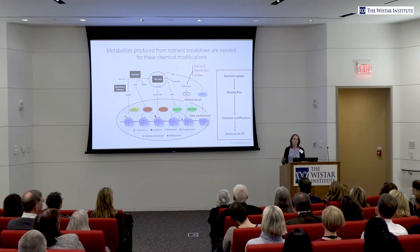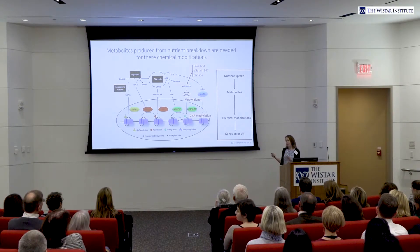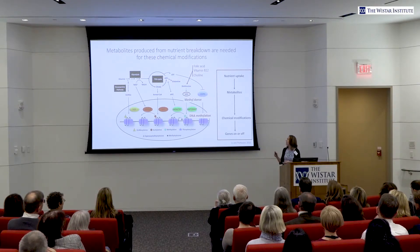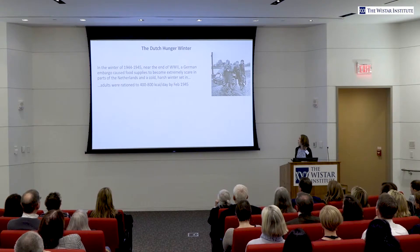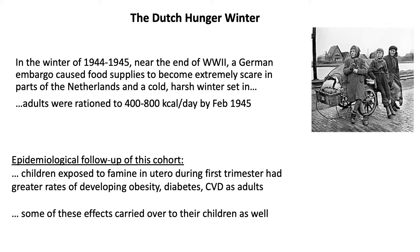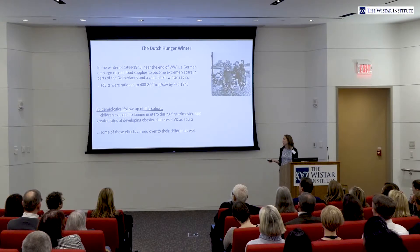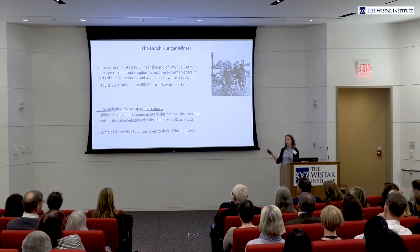But that's a weird strain of mice — does that have anything to do with what's happening in people? There is actually some evidence that the answer to that is yes, and some of the best evidence comes from a historical event. You may have heard of this — this is the Dutch Hunger Winter. This was an event that took place during the winter of 1944 to 1945, near the end of World War II. Basically, the Nazis cut off food supplies to parts of the Netherlands, so the people didn't have access to much food. It was an extremely cold, harsh winter. Adults were rationed down to about 400 to 800 kilocalories a day by February of 1945 — true starvation conditions. But the Dutch kept really outstanding medical records during this time period, and this has allowed there to be extensive epidemiological follow-up of this particular cohort.